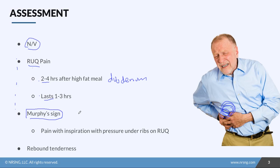To perform Murphy's sign, press your fingers or hand up under the ribs on the right upper quadrant and ask the patient to take a deep breath. If the pain is so bad that they can't breathe in fully, that's a positive Murphy's sign. We also do rebound tenderness: press on the right upper quadrant and then release — the pain is actually worse on release than with the initial pressure.